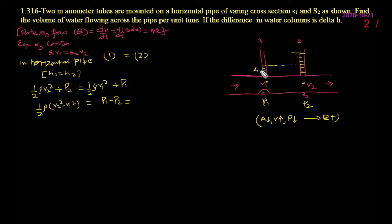Difference of the height, I can write, let this is H1, this is H2. According to question, difference of height, I can write H2 minus H1, that I represent by delta H. So, I can write here, what is the pressure difference, that is rho G into delta H simply.